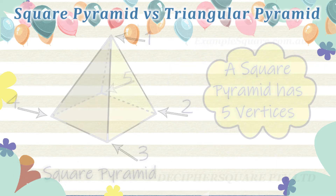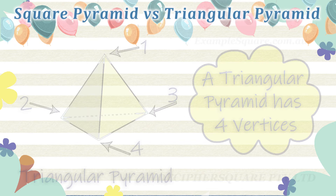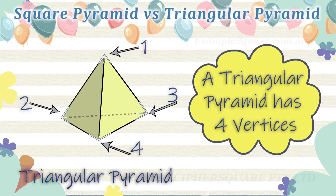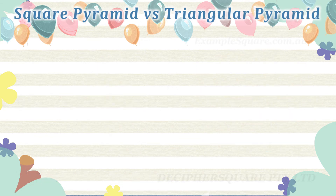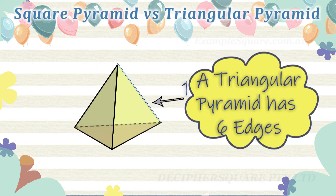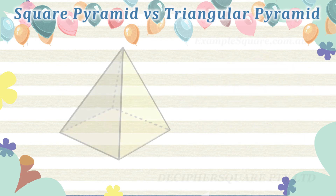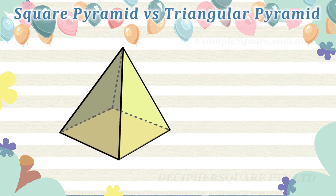A square pyramid has five vertices, while a triangular pyramid has four vertices. A triangular pyramid has six edges, and a square pyramid has eight edges.